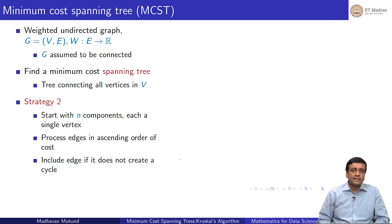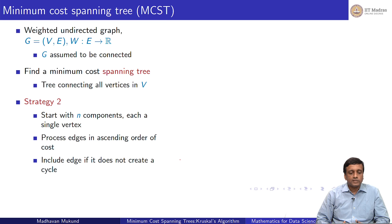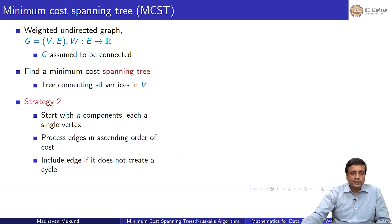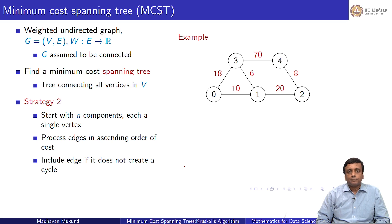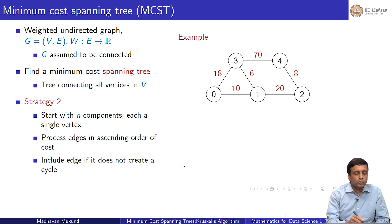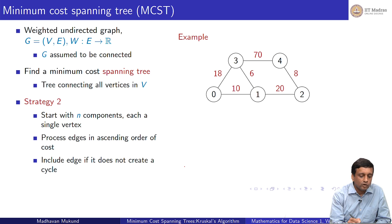In Kruskal's algorithm, we start with all the vertices disconnected, forming n components, and then we try to merge components. We try to connect components by the smallest edge that connects two components. Let us do an example and then we will do it in more detail. The first thing we do in Kruskal's algorithm is to sort the edges in ascending order.